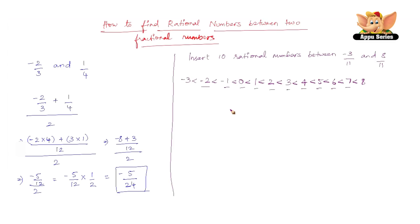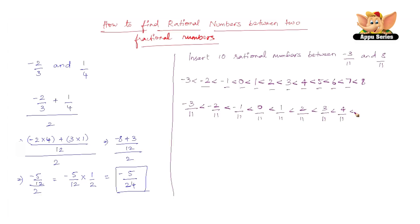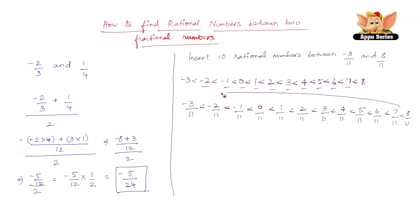So all we have to do is just write them with the denominator now. Each of these numbers written over 11 is less than 8 by 11. So therefore the 10 rational numbers between minus 3 by 11 and 8 by 11 are these.